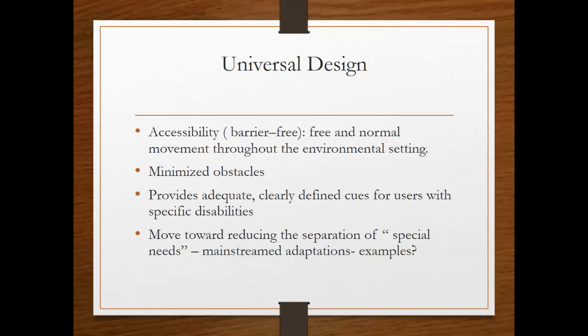Universal design aims to minimize obstacles — maybe just moving an electric door opener switch from one side. For example, at Dugan Library, the switch is on the wrong side, making it difficult to hit it and then get back out of the way before the door opens. Universal design also provides clearly defined cues for users with specific disabilities — for example, the symbols for men's and women's restrooms.